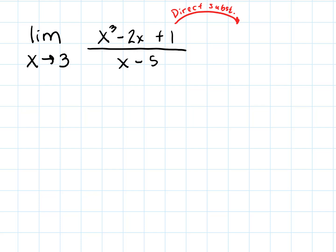Rational functions are pretty easy to identify the domain. Notice the denominator x minus 5 — that is where we would have an issue. If we were trying to approach 5, we might have to do more work because there might be a vertical asymptote or a hole at 5. But for this one, x equals 3 is definitely in the domain, so we are good to go for direct substitution.